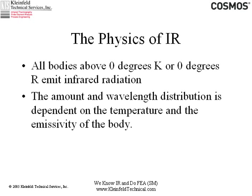The physics involved is that all bodies above absolute zero will emit infrared radiation. The amount of that radiation and the wavelength distribution are dependent on the temperature and the emissivity of the body. Emissivity is essentially a physical characteristic of the surface — things that are reflective have low emissivity, things that are non-reflective have high emissivity, and emissivity ranges from zero to one.